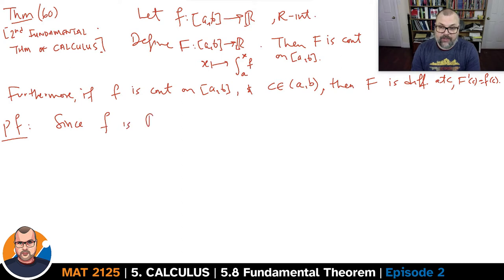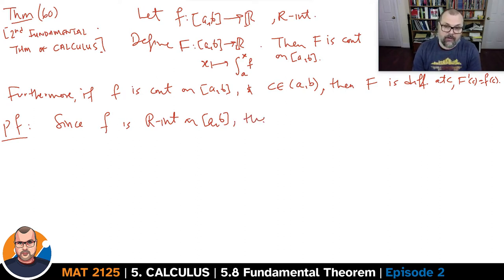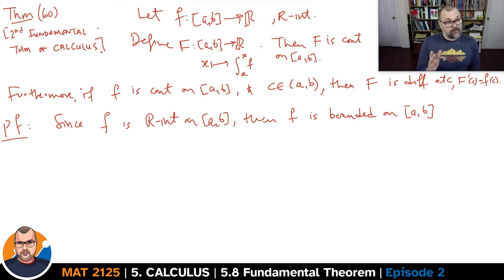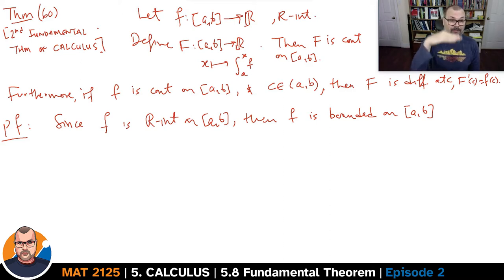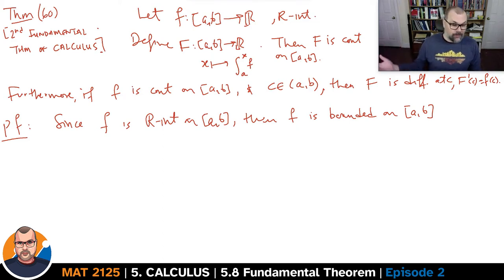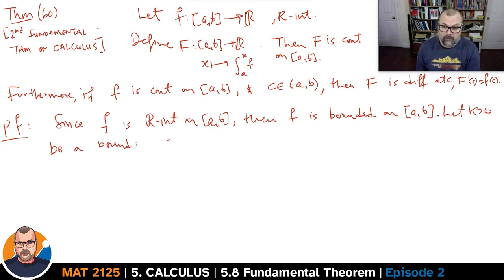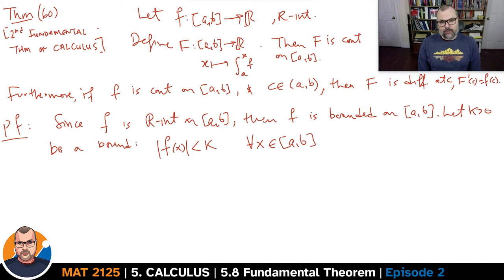Since little f is Riemann integrable on AB, we know, amongst other things, that it has to be bounded. If it's not bounded, it cannot be Riemann integrable — it's possible the improper integral would exist, but in terms of how we've defined Riemann integrability, we need an upper bound and a lower bound for the function on each sub-interval of the partition. So the function has to be bounded on AB if it is integrable. Let K be that bound.